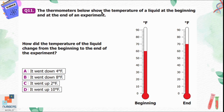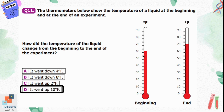Question number eleven: the thermometers below show the temperature of a liquid at the beginning and at the end of the experiment. How did the temperature change? Options: A, down four degrees Fahrenheit; B, down eight degrees Fahrenheit; C, up two degrees Fahrenheit; D, up ten degrees Fahrenheit. At the beginning the temperature was 60 degrees Fahrenheit, and at the end it was 70 degrees Fahrenheit — it went up ten degrees. So option D is correct.